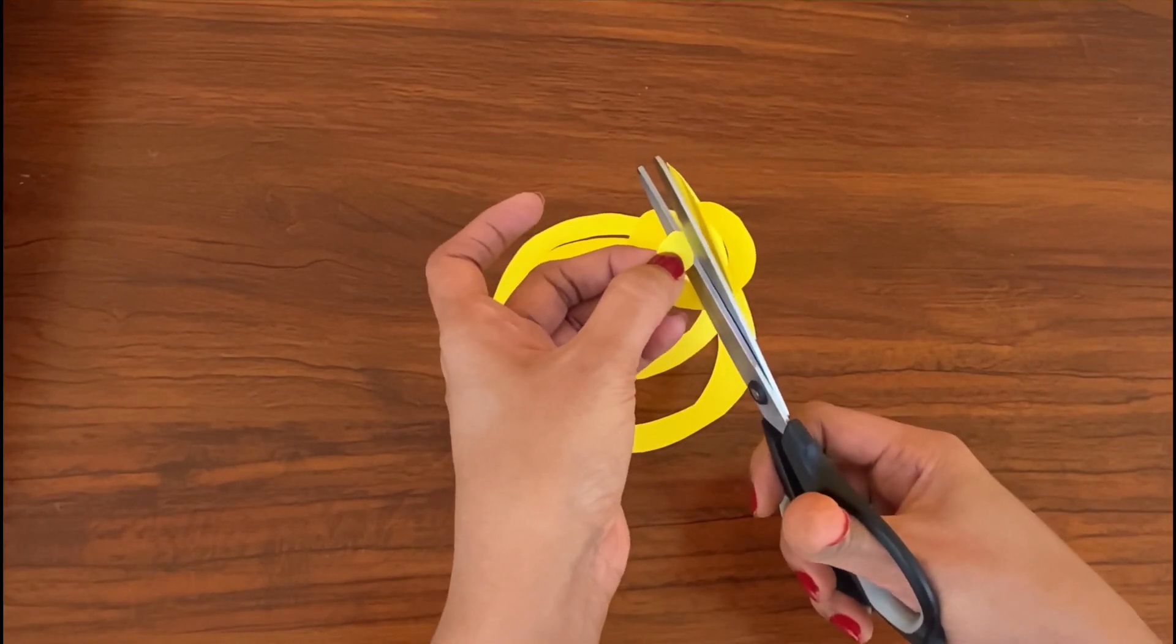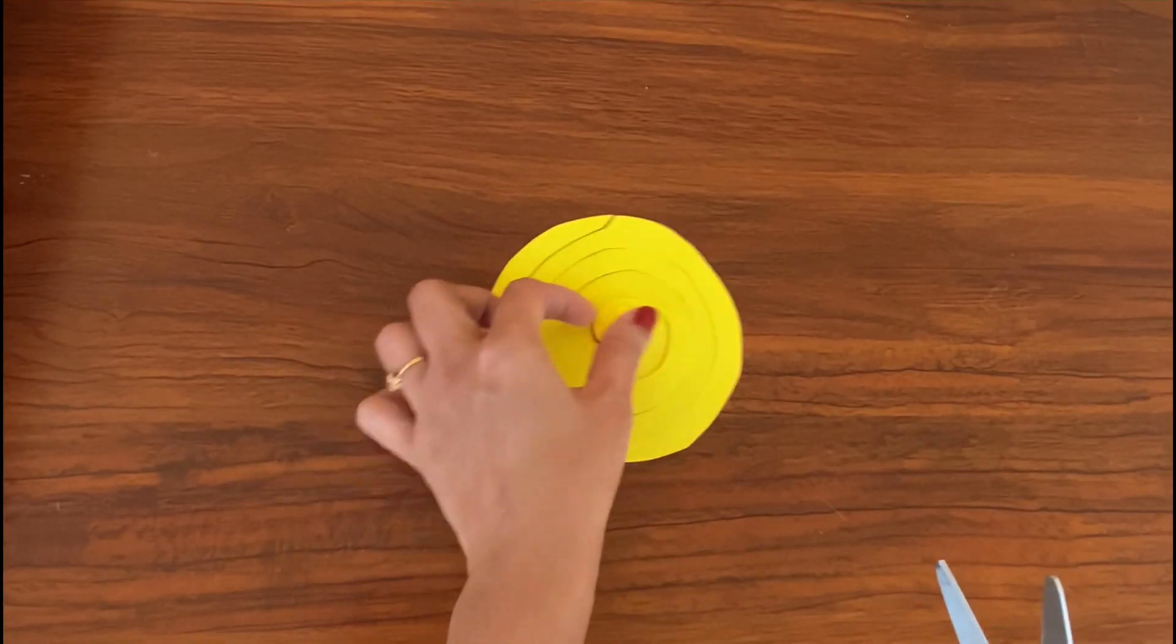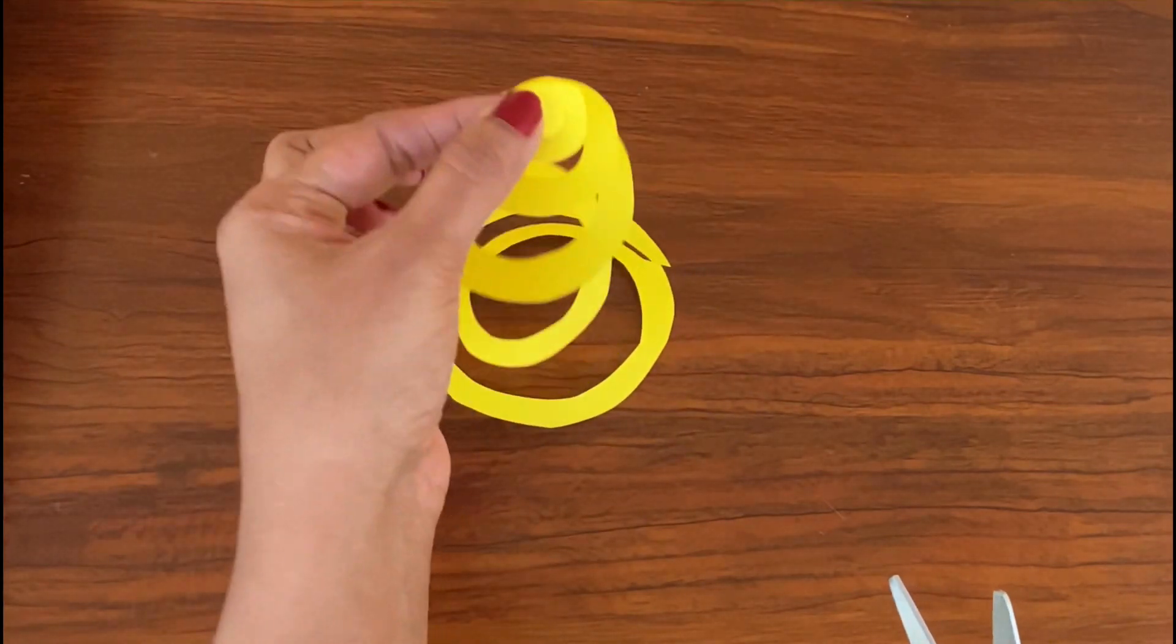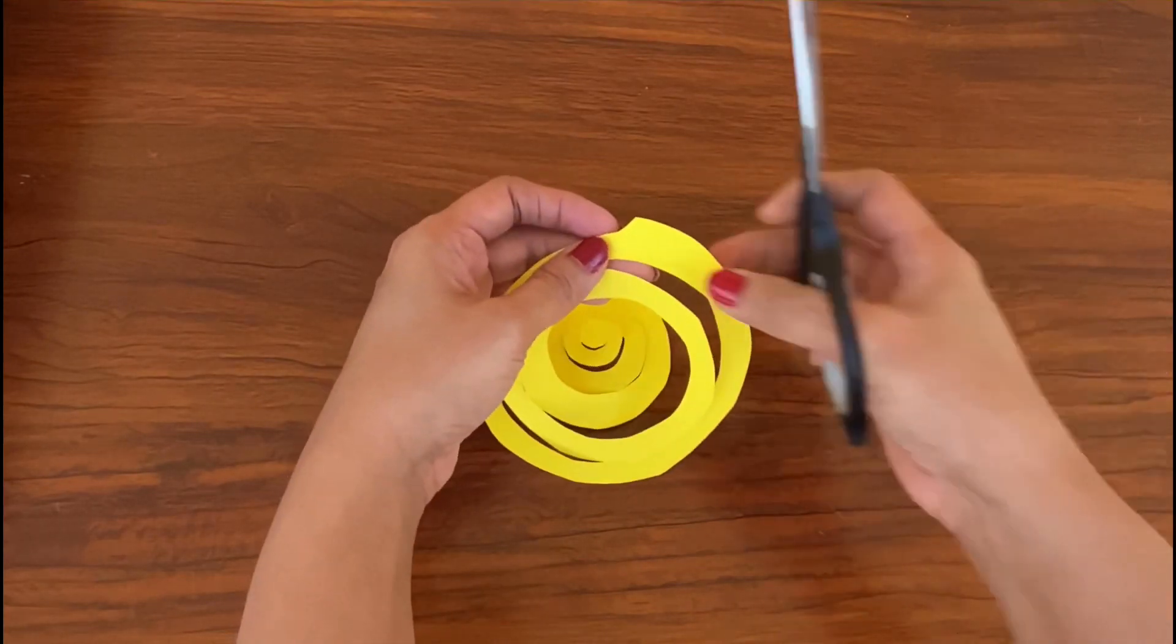We're almost done, just cut this till the end, leave a very small piece at the end and this is a circular design that you will end up with. Looks perfect and I'll just trim the ends to get a very neat strip.